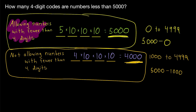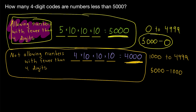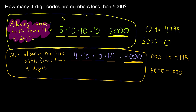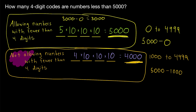So what if we were counting four-digit codes that are less than 3,000, and we were allowing four-digit codes that represent numbers with fewer than four digits? Just like how our answer was 5,000 minus 0, if we were counting numbers less than 3,000, the answer would be 3,000 minus 0 — a total of 3,000 codes. And if we were counting four-digit codes less than 3,000 but not allowing numbers with fewer than four digits, the answer would be 3,000 minus 1,000 — a total of 2,000 codes.